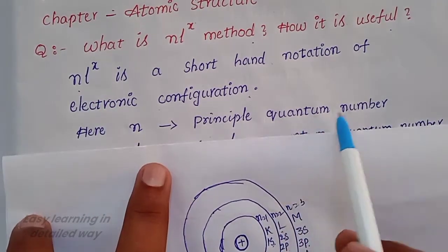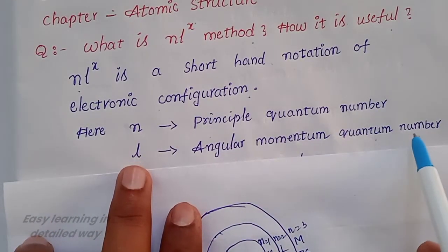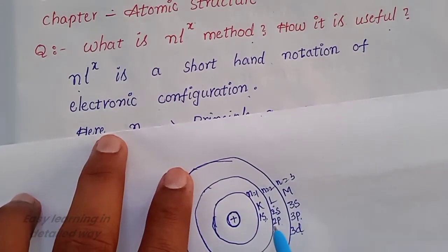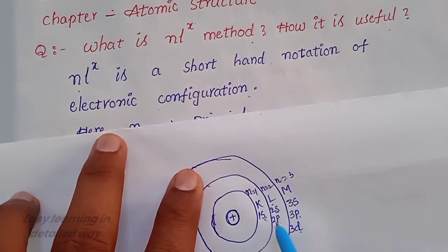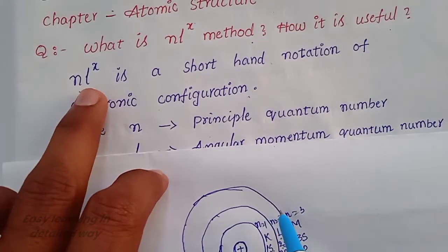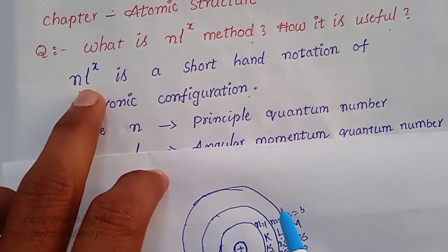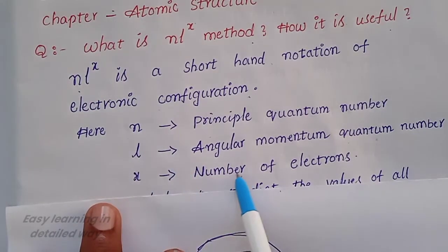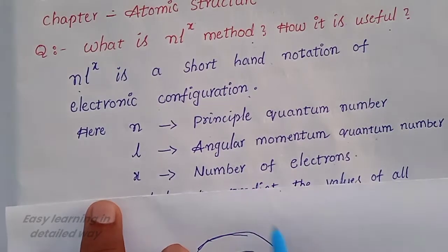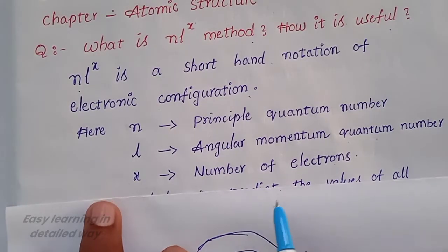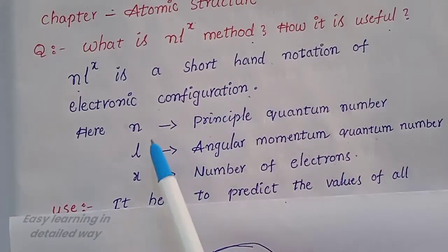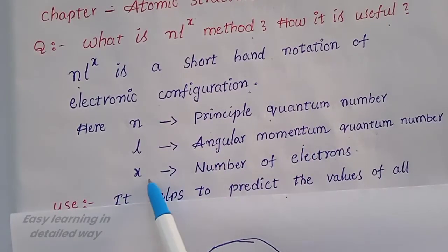N stands for principal quantum number and L stands for angular momentum quantum number — that is the subshell. The subshell can be s, p, d, and so on. And X is the number of electrons. So NLX is a shorthand notation of electronic configuration: N is the principal quantum number, L is the angular momentum quantum number, and X is the number of electrons.